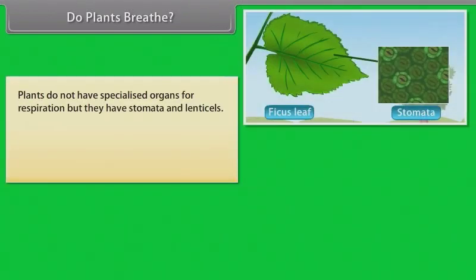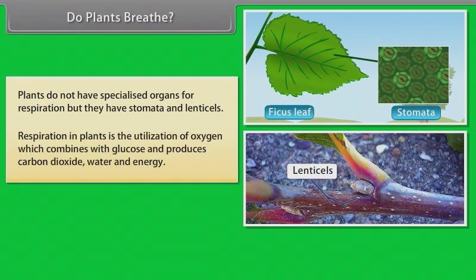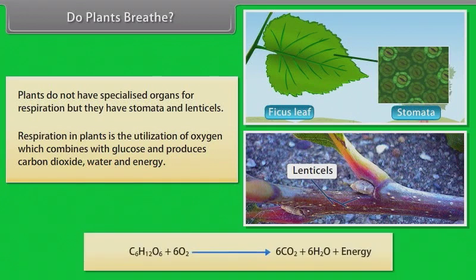Plants do not have specialized organs for respiration, but they have stomata and lenticels. Respiration in plants is the utilization of oxygen, which combines with glucose and produces carbon dioxide, water, and energy. The combustion of glucose gives carbon dioxide, water, and energy.